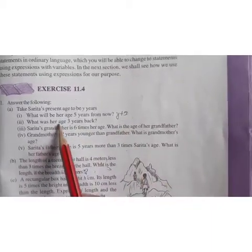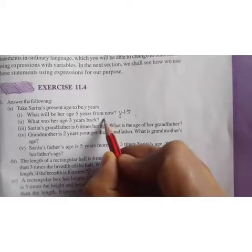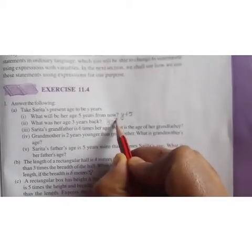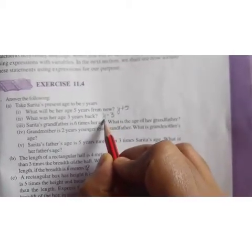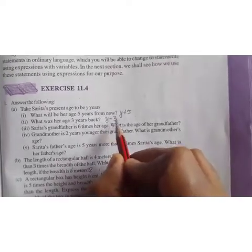What was her age 3 years back? So before, what do you have to do? Add or subtract children? We have to subtract. So you will write Y minus 3. Because Y is her present age and 3 years ago means 3 years less, so minus 3.